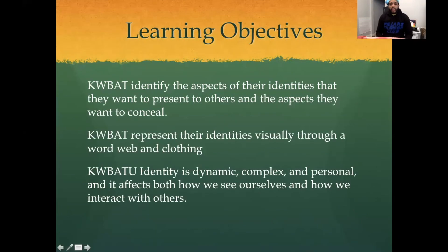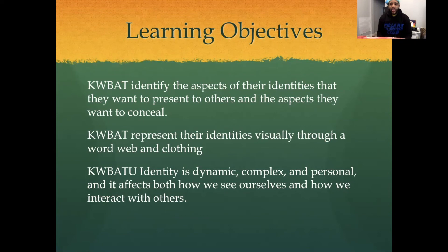Wrapping up — learning objectives. In this lesson, Kipses were able to identify the aspects of their identity that they want to present to others and the aspects they want to conceal. Kipses were also able to represent their identity visually through a word web and clothing, and to understand that identity is dynamic, complex, and personal — and that it affects both how we see ourselves and how we interact with others.